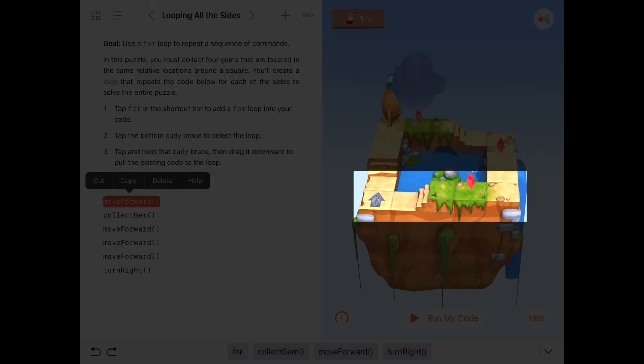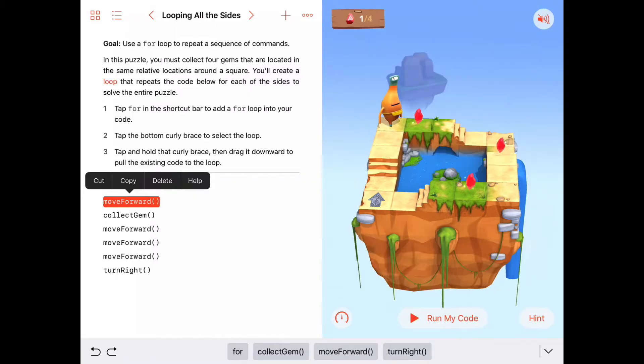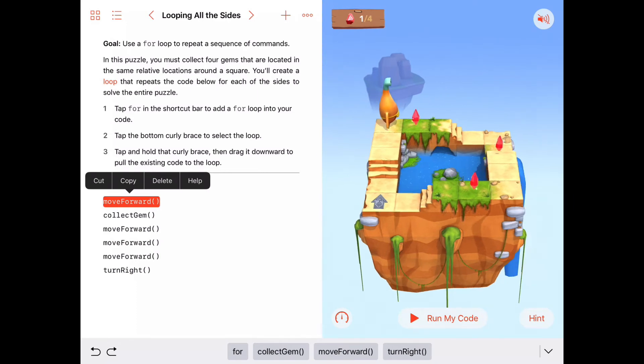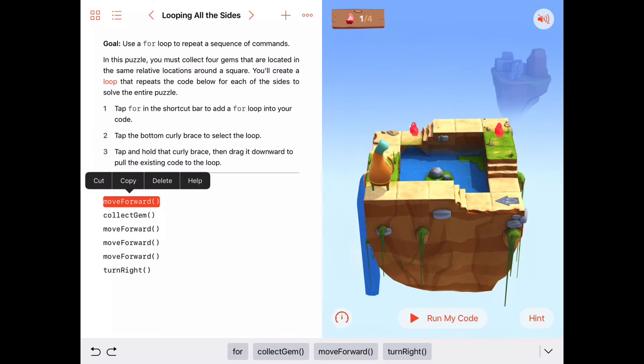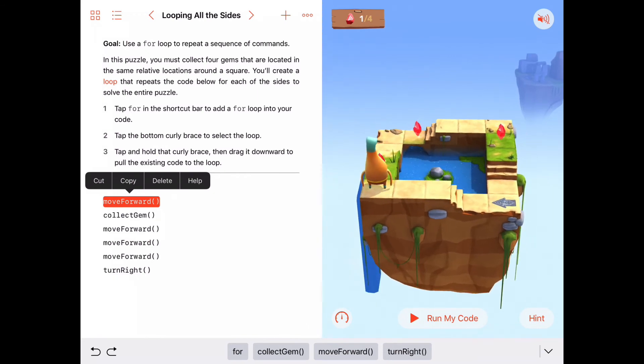And finally on the back row, again, it's the same set where we're going to move forward, collect gem, move forward, move forward, move forward, turn right, which will get us all set to do the puzzle again if we needed to. So if we do this same sequence of commands four times, we will complete the puzzle. Okay, sounds like the perfect job for a for loop. So the way we're going to do this here is let's start above our sequence of commands and let's either start typing the word for or tap down in the shortcut bar here.